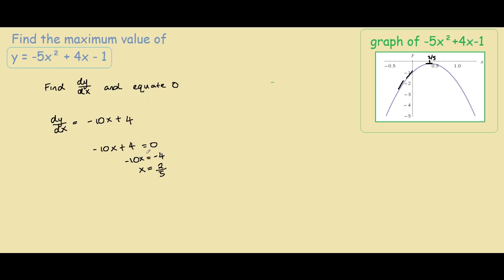And now to find the maximum value, we substitute x equals to 2 fifths back into the function. So we have y equals to negative 5 times 2 fifths squared plus 4 times 2 fifths minus 1.